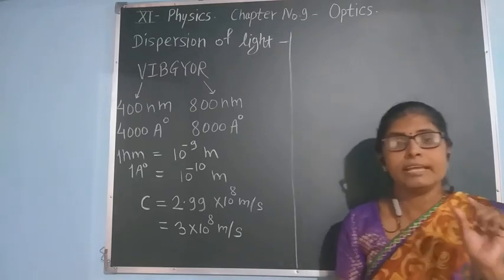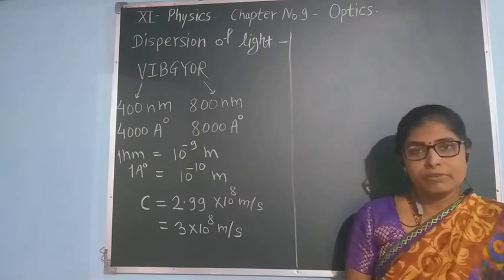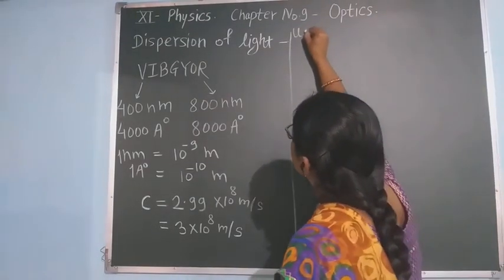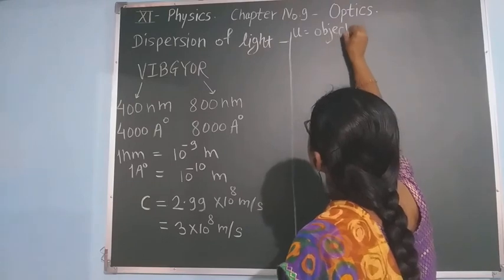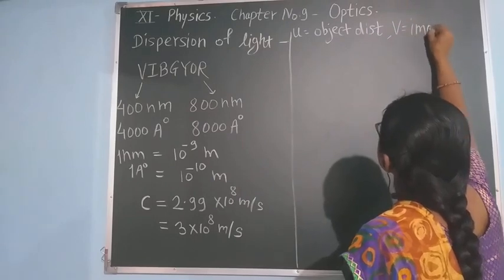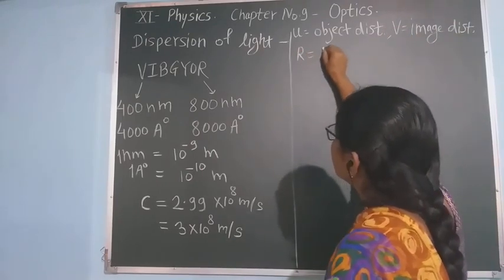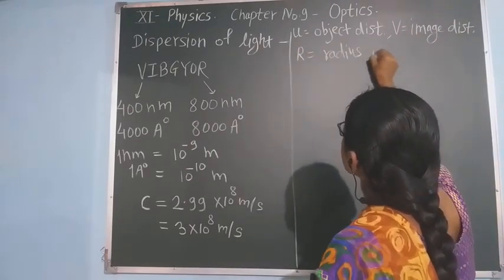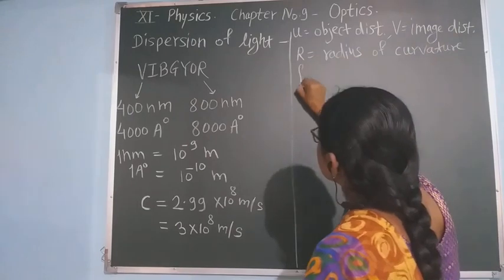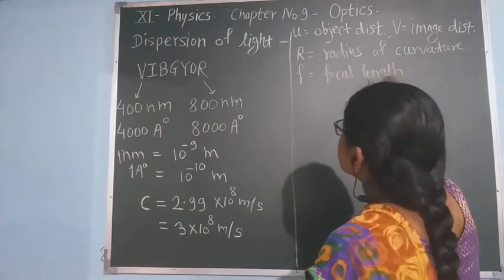Now we will discuss spherical lenses — like convex lens and concave lens. We have also studied mirrors, like concave mirror and convex mirror. In that context, you used terms such as U for object distance, V for image distance, capital R for radius of curvature, and F for focal length.